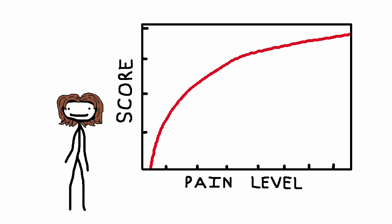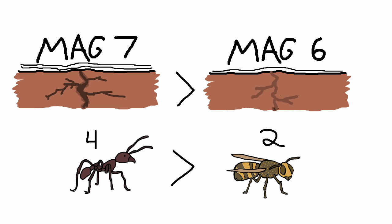In all seriousness though, I'm pretty sure the index is meant to be logarithmic, like earthquake magnitudes. So just like a magnitude 7 earthquake is ten times as powerful as a magnitude 6, a bullet ant sting causes a hundred times as much pain as a honeybee.